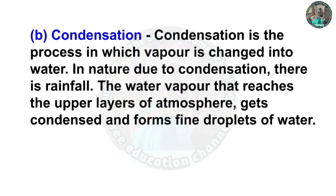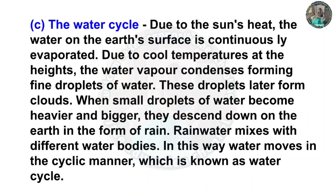B: Condensation. Answer: Condensation is the process in which vapor is changed into water. In nature, due to condensation there is rainfall. The water vapor that reaches the upper layers of the atmosphere gets condensed and forms fine droplets of water.